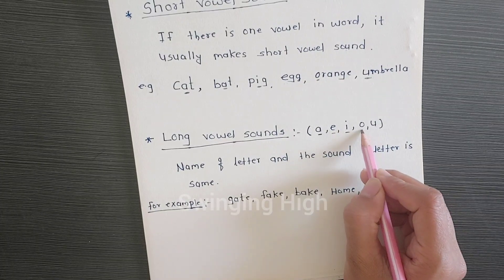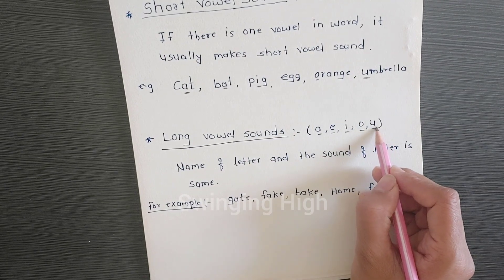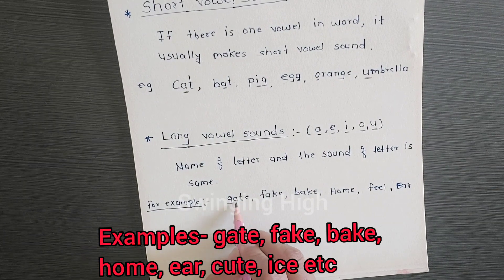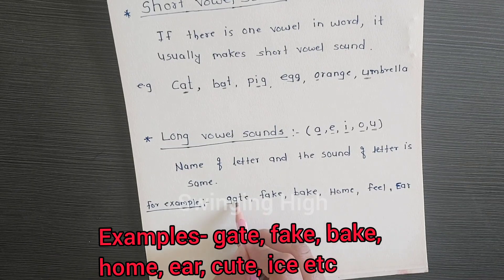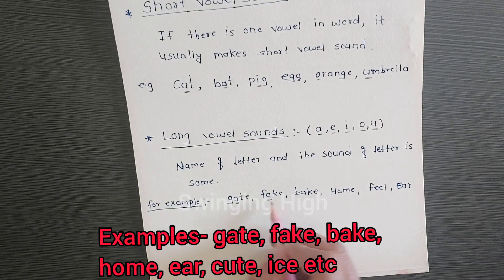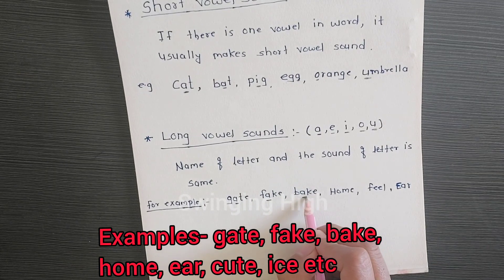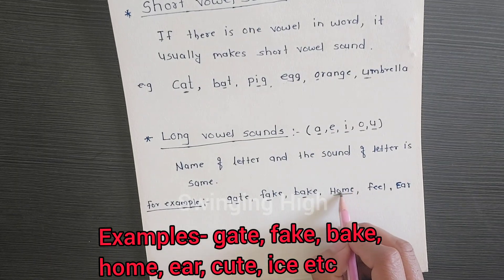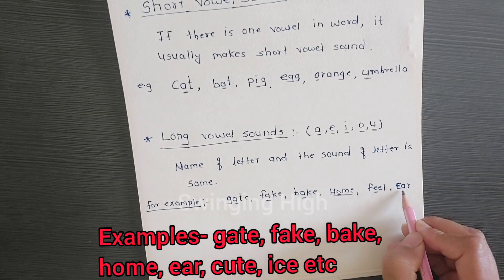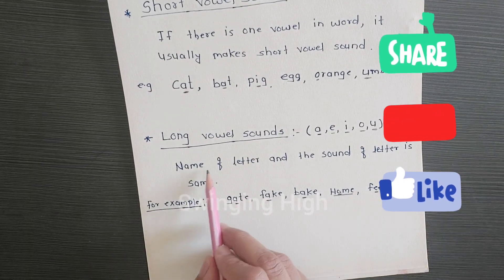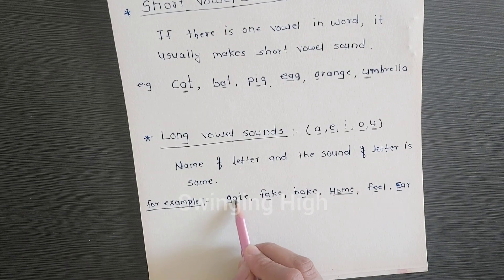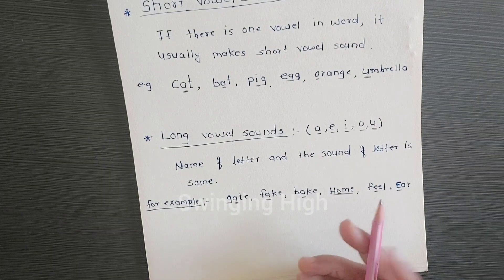The sound of I is 'i', the sound of O is 'o', the sound of U is 'u'. For example, 'gate' — A says 'ay', its name. 'Bake' — A says 'ay'. 'Home' — O says 'o'. 'Feel' — E says 'ee'. 'Ear' — E says 'ee'. The name of the letter and the sound of the letter are the same.